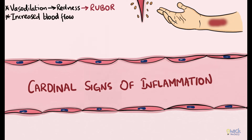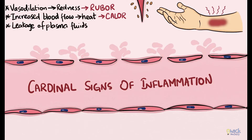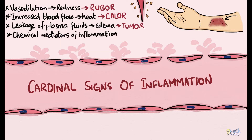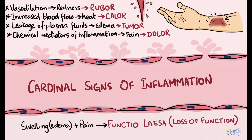Vasodilation results in increased blood flow causing calor or heat. Leakage of plasma fluids from the vessels and accumulation of these fluids in extravascular space causes tumour or swelling. Chemical mediators of inflammation like histamine and prostaglandins may cause dolor or pain. Finally, swelling and pain may cause a loss of function of the tissue involved, called functio laesa or a loss of function.